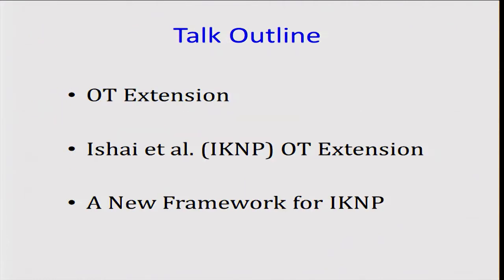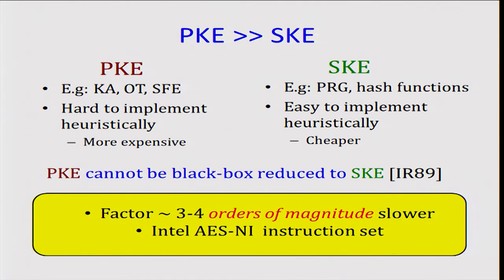In the first part of the talk, I'll give a more detailed motivation about OT extension and explain the problem. Public key primitives such as key agreement or oblivious transfer are usually hard to implement heuristically. They typically tend to be algebraic in nature so there are more cryptanalytic attacks. The parameters have to be bigger and they usually end up more expensive.